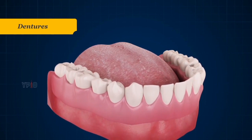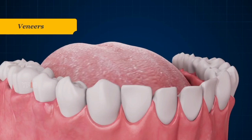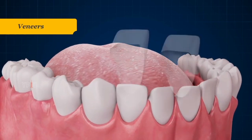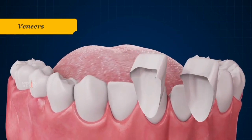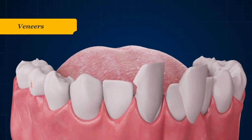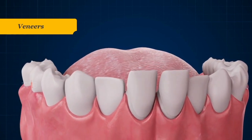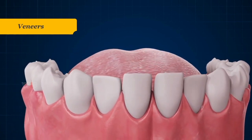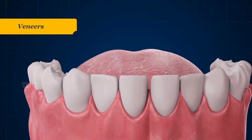Dentures are removable appliances that are used to replace some or all of the missing teeth and part of the gums. They are composed of acrylic resin and are supported by the underlying bone, cheeks, lips, and remaining teeth.